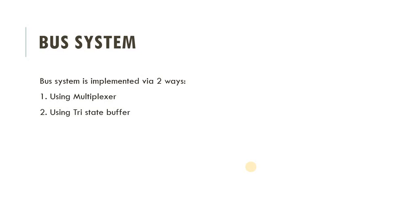You can think of a computer bus like a public transportation bus or a school bus. These buses are capable of transporting people from one destination to another. Similarly, computer buses transmit data from one location or one device to another location or device. The computer bus is the medium and the data is transferred from one register to another register via the bus — it acts as an intermediary between registers.